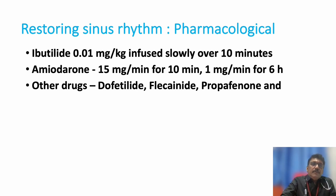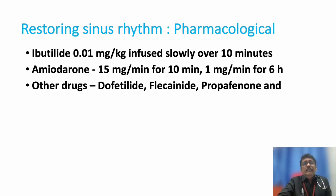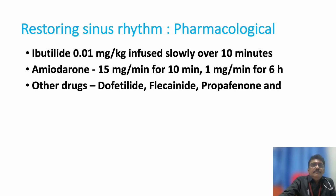Restoring sinus rhythm is secondary in AF management. Primary is rate control with the drugs discussed, and preventing embolism with heparin, warfarin, or newer agents. For pharmacological rhythm control, drugs like ibutilide, dofetilide, flecainide, and propafenone are available. Amiodarone has the advantage of controlling both rate and rhythm. In settings without a proper cardiology or electrophysiology setup, amiodarone can control both rate and rhythm in most cases.